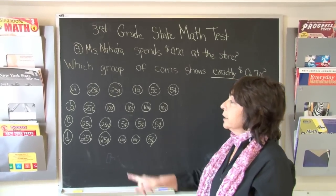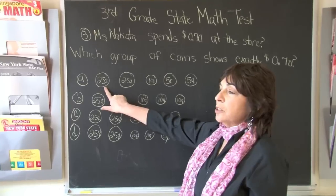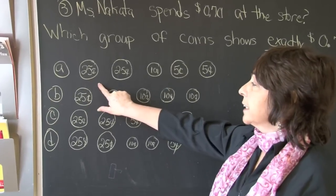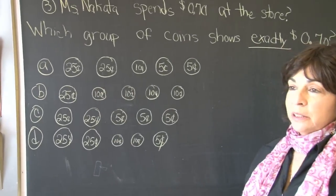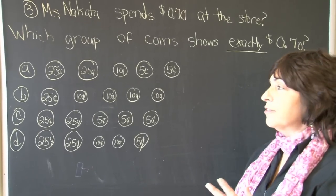So let's look at number one. The first coin is a quarter, 25 cents. The second coin is a quarter, 25 cents. So that's 25, 50.